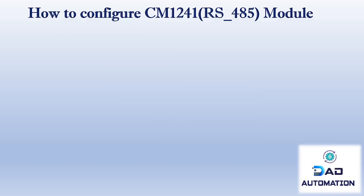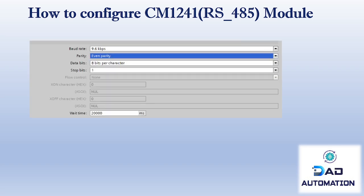How to configure the CM1241 module in the TIA Portal environment: in TIA Portal, port configuration can be set as shown here. Baud rate, parity, data bits, and stop bit can be set according to the device's configuration in the RTU network. These parameters are not static — they can be changed at runtime as needed.